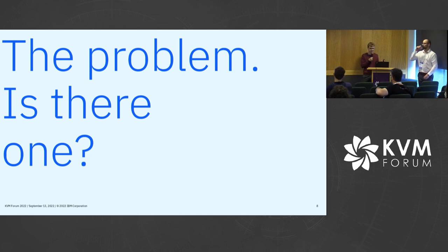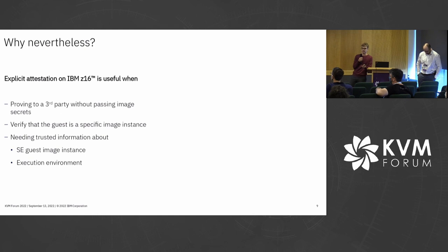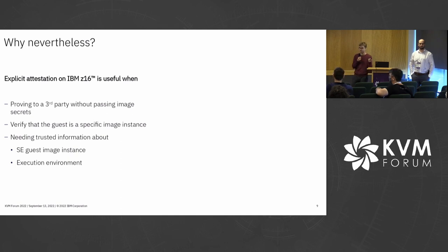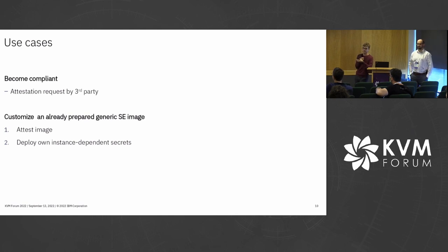I just said we can do attestation implicitly, so why do it explicitly or externally? There are some reasons. First, we may want to prove to a third party that we're running under secure execution without passing any image secrets or giving it access to our image. Or we want to verify not only that our guest is a specific image, but also a specific instance of that image because we have it running multiple times. Or in general, we need trusted information about our guest image instance or the execution environment. Use cases include compliance attestation with a third party, or customizing an already-prepared generic secure execution image from another party we more or less trust.